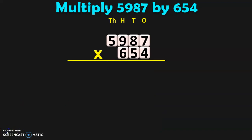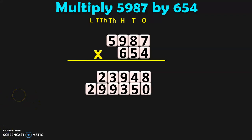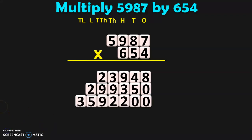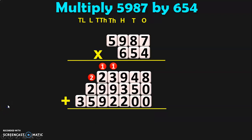The next sum is 5,987 by 654. First, multiply 5,987 by 4 — you will get the answer 23,948. Next, multiply 5,987 by 50 because 5 is in the 10s place — on multiplication by 50, you get 2,99,350. The third step is to multiply 5,987 by 600 because 6 is in the 100s place — on multiplication by 600, you get the third product as 35,92,200. Adding all 3 products, you get the answer 39,15,498.